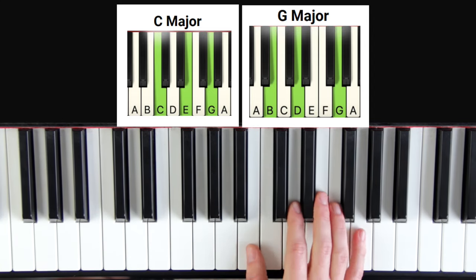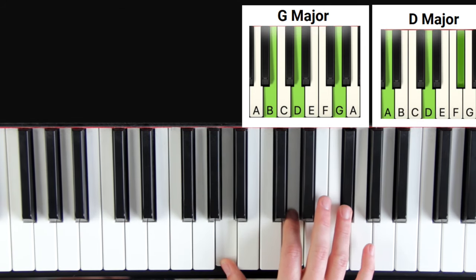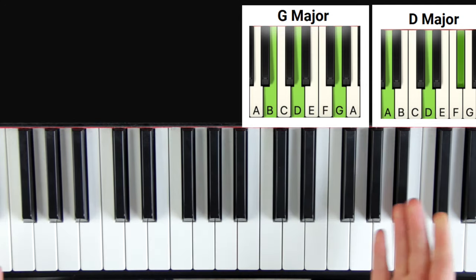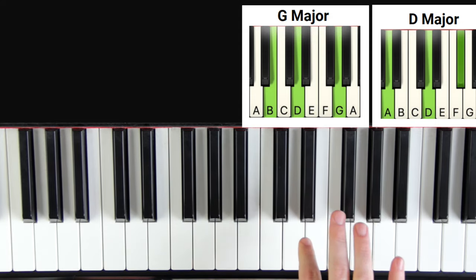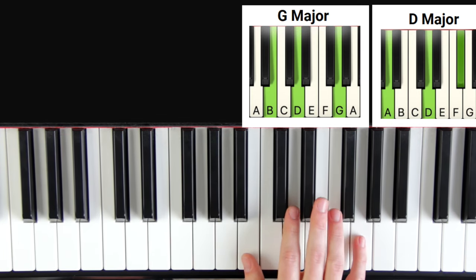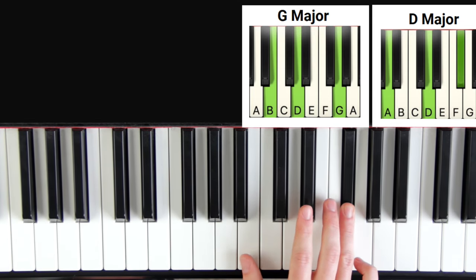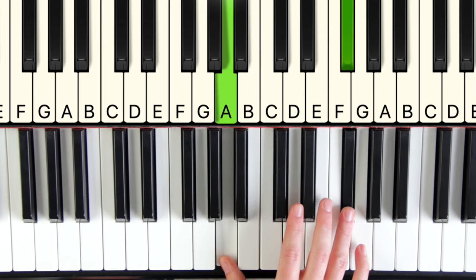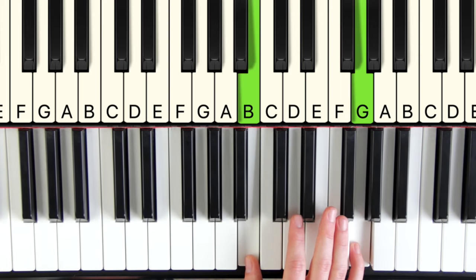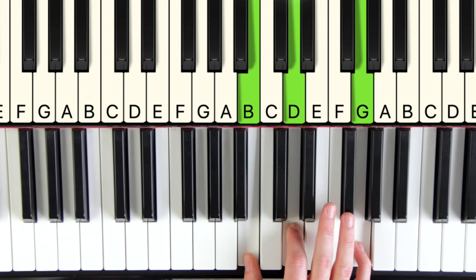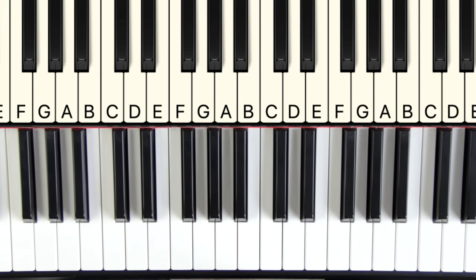Alternate C and G until it's in your muscle memory. The next two chords: G chord to D chord. Black notes aren't any harder to play than white notes, so don't freak out. The middle note D stays the same as an anchor. The outside notes move down: your pinky moves from G down to F sharp on your fourth finger, and your thumb moves from B down to A. Practice the outside notes moving first, then add the middle D. Alternate G chord and D chord until it's in your muscle memory.